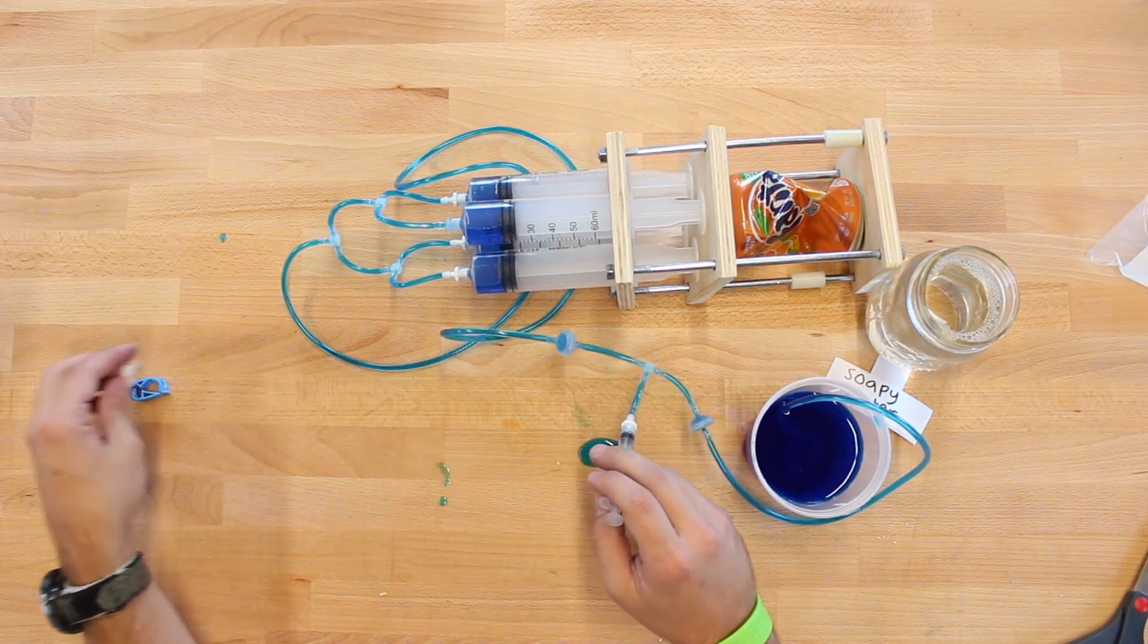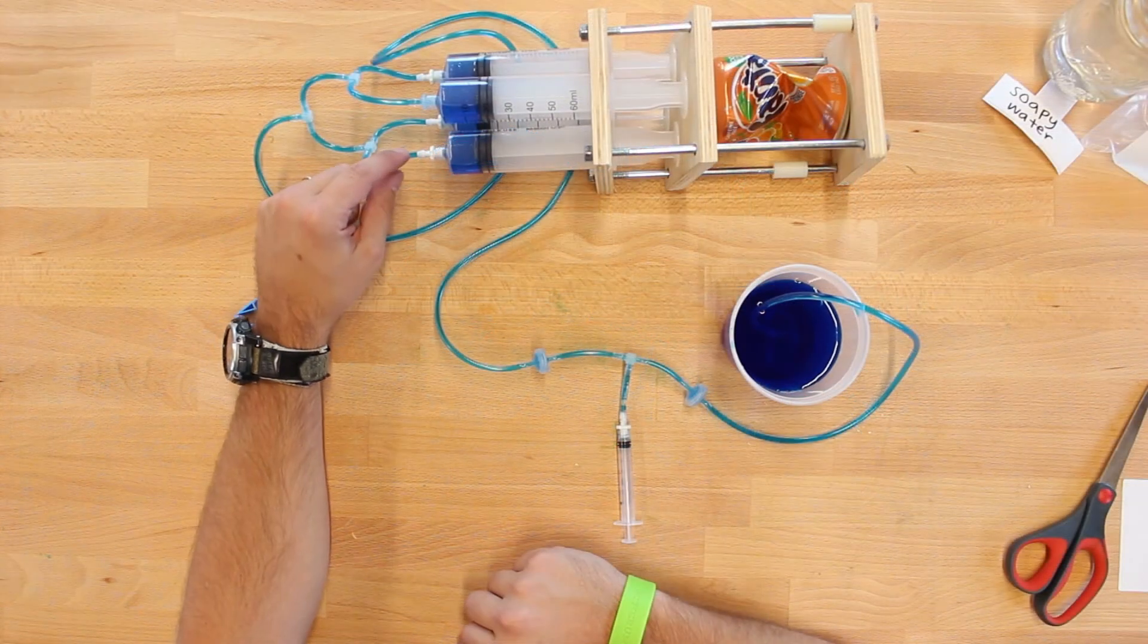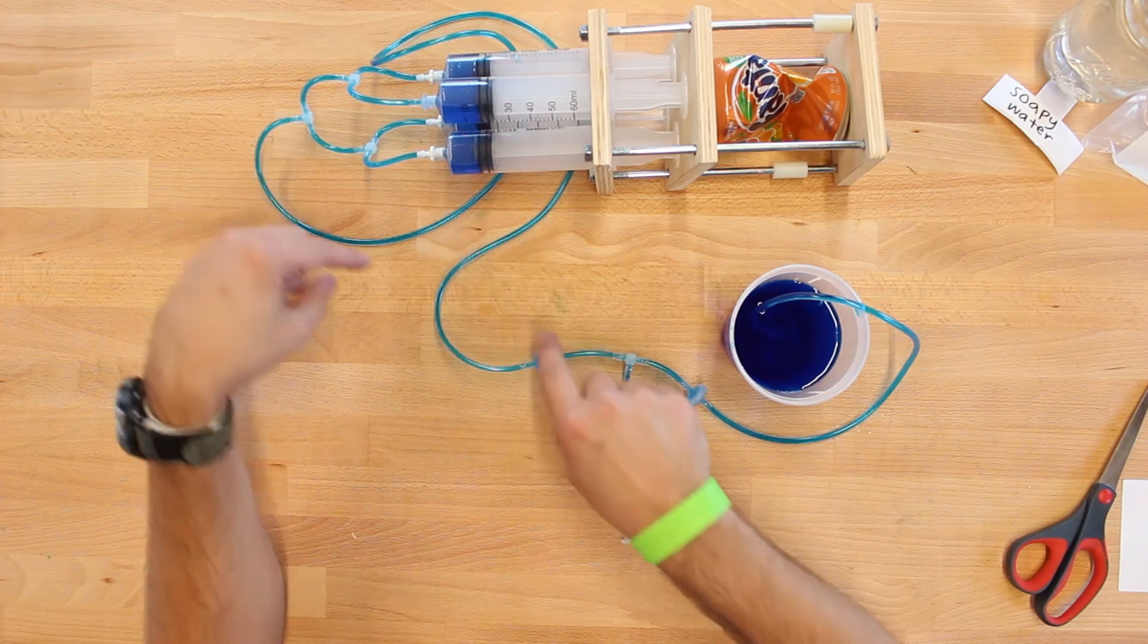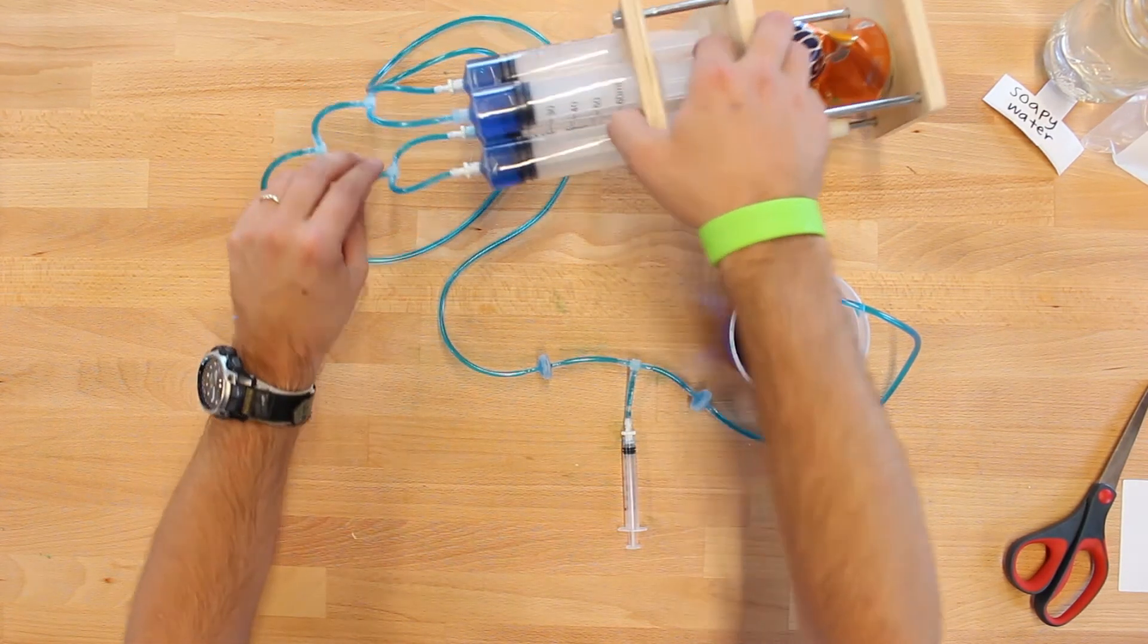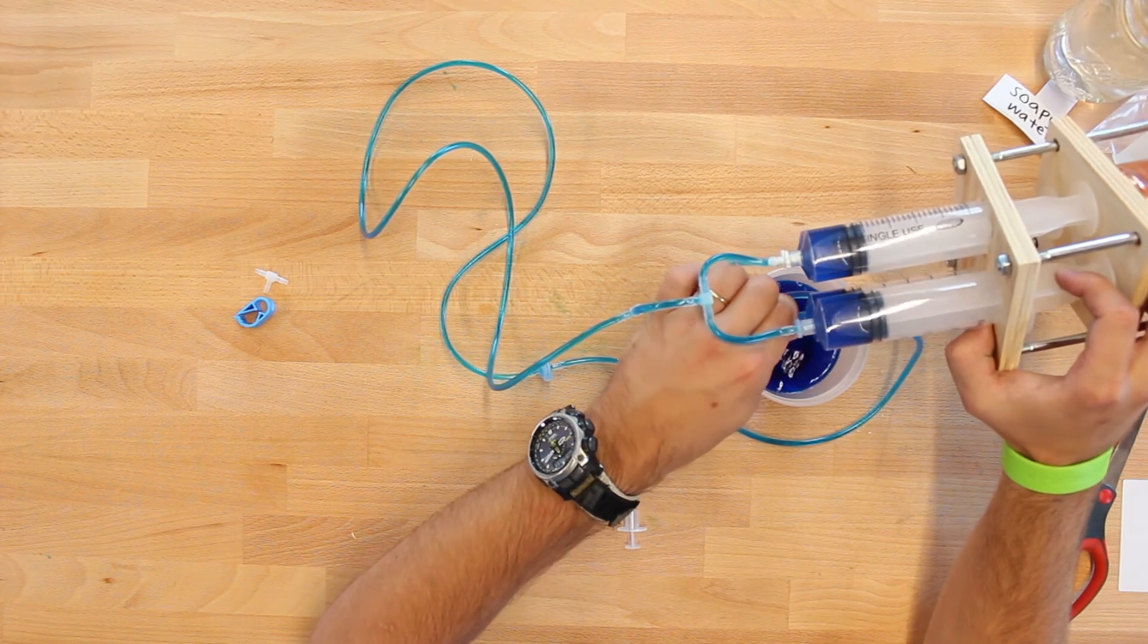Now to get the can out, we're going to need to relieve pressure past the second check valve right here. It's easiest to do this by unscrewing one of the adapters and pushing the middle plate up.